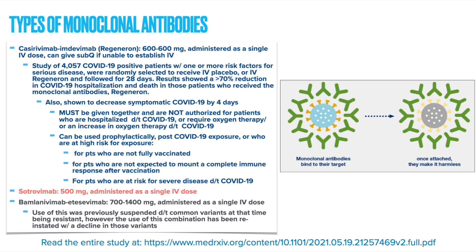I shared at the bottom of this page a study done using 4,057 COVID-positive patients with one or more risk factors for severe disease. Patients were randomly selected to receive either IV placebo or IV Regeneron and followed for 28 days. Results showed a greater than 70% reduction in COVID-19 hospitalization and death in those who received monoclonal antibodies. It also showed a decrease in symptomatic COVID by four days, and it can also be used prophylactically in certain populations who have had COVID exposure — including those not fully vaccinated, those not expected to mount a complete immune response after vaccination, and those at risk for severe disease.